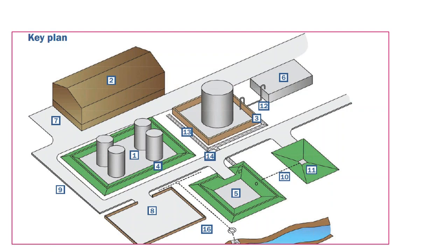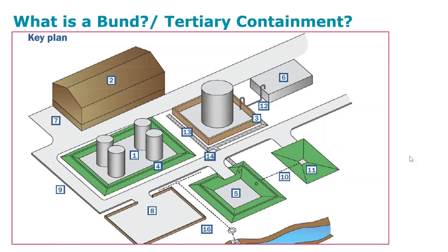If the bund were also to fail, there's something called tertiary containment — everything is then designed to flow into a collection point, draining from anywhere in the tank farm into that tertiary containment, which must be designed for the worst-case scenario. There's also a little drain going into the local Ambazari Lake — which is exactly what we want to prevent.